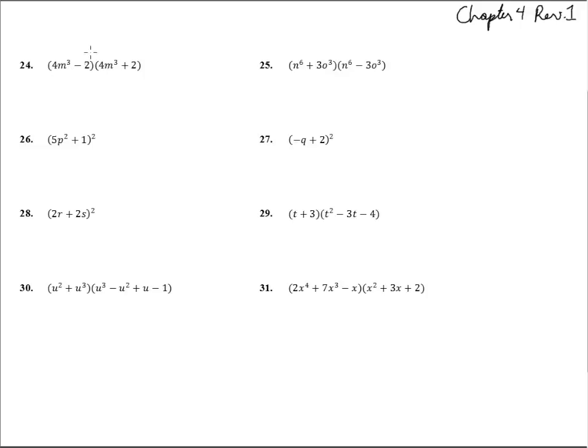4m cubed minus 2, 4m cubed plus 2. This is that special pattern here where everything's the same except that plus or minus sign. That means we're going to get this one, 16m to the 6th. The two middle ones will cancel out, and you can see that, plus 8 and a minus 8 will cancel each other, and then we'll have minus 4. It'll give us a subtraction of this times itself and that times itself.